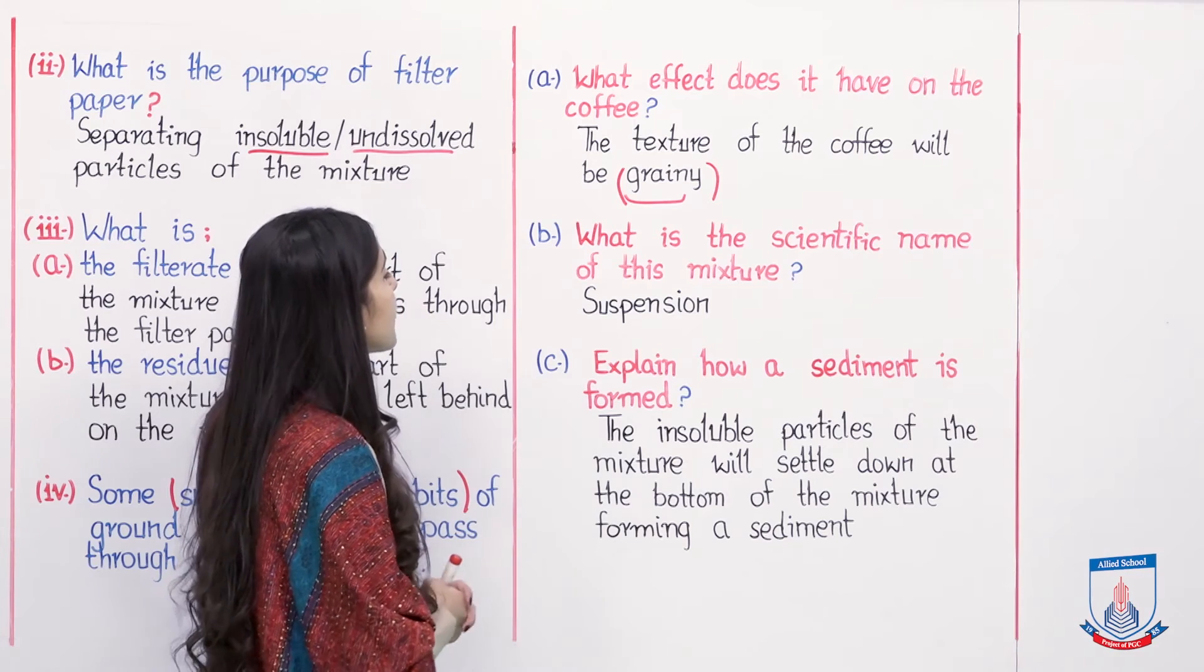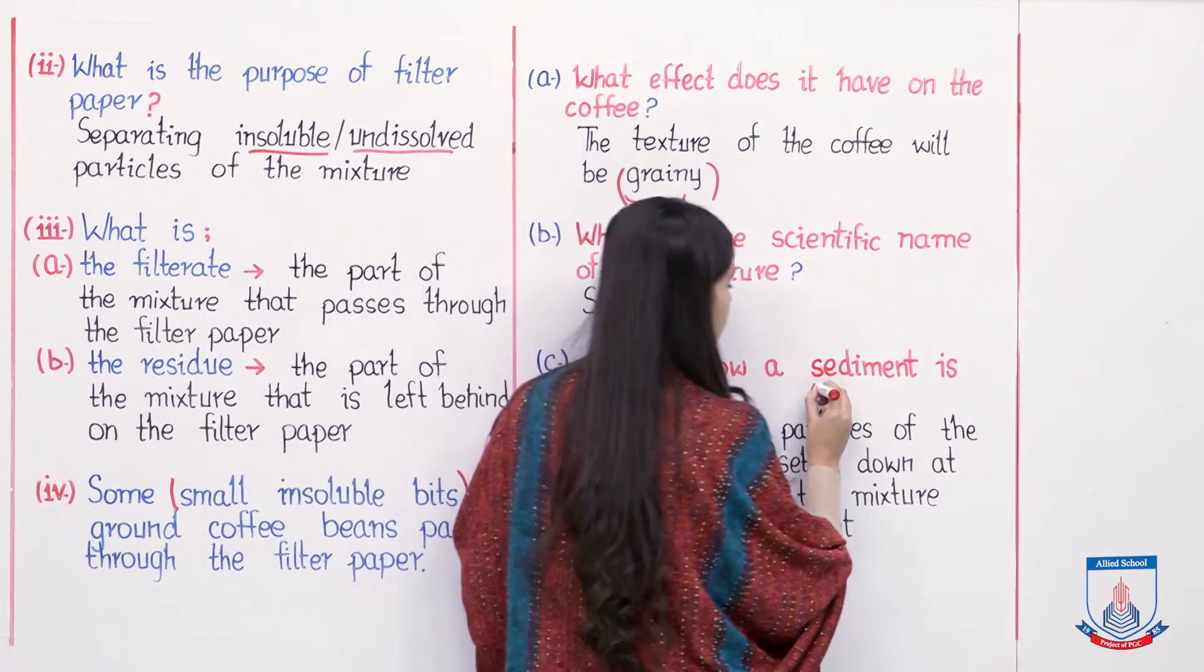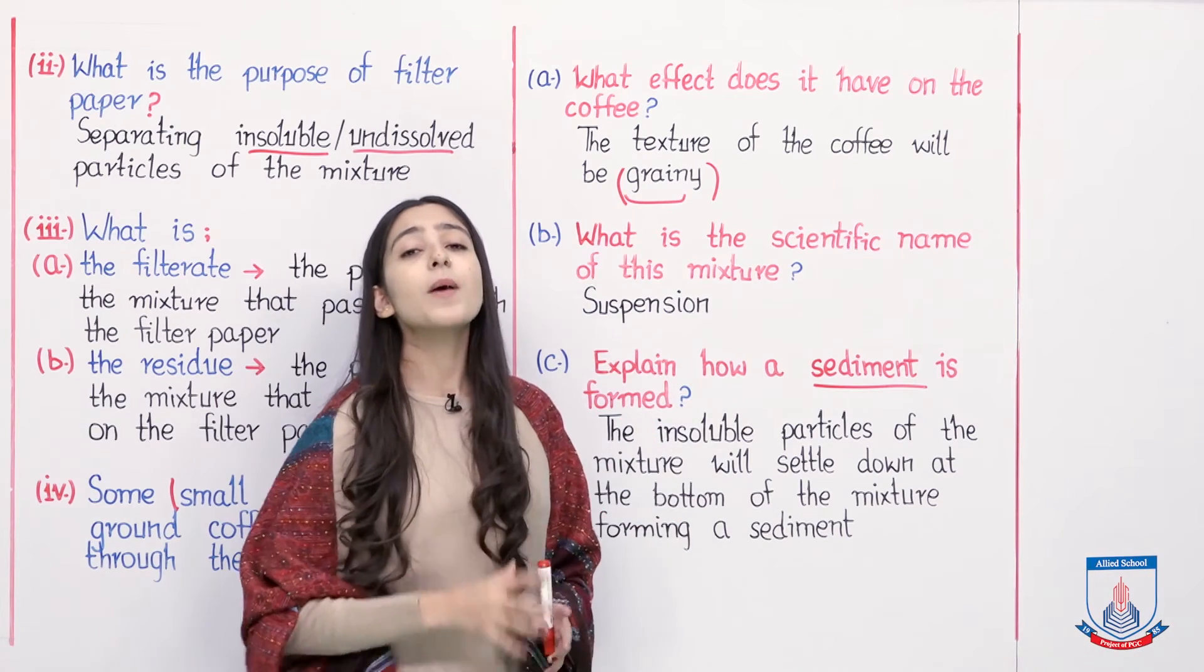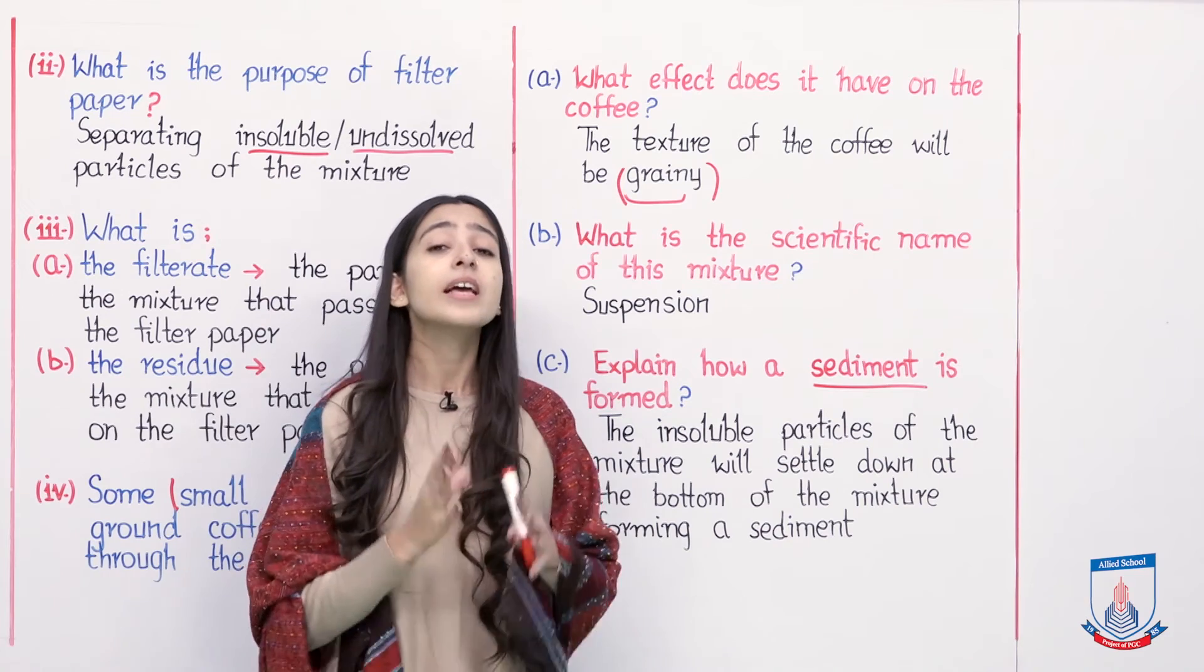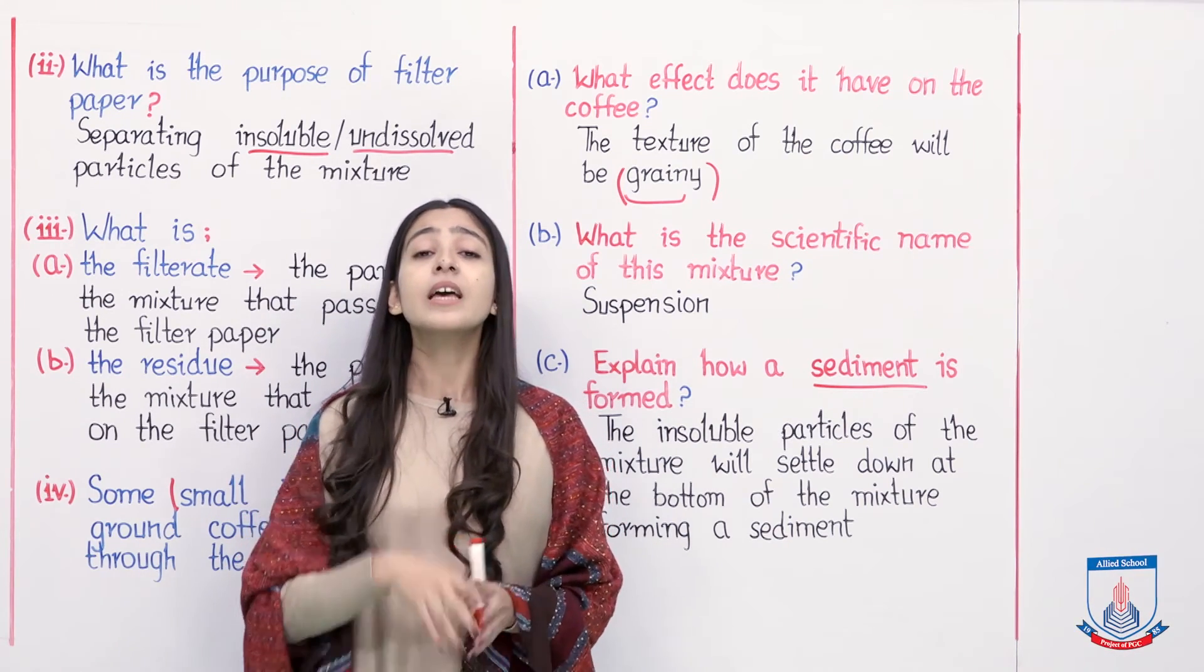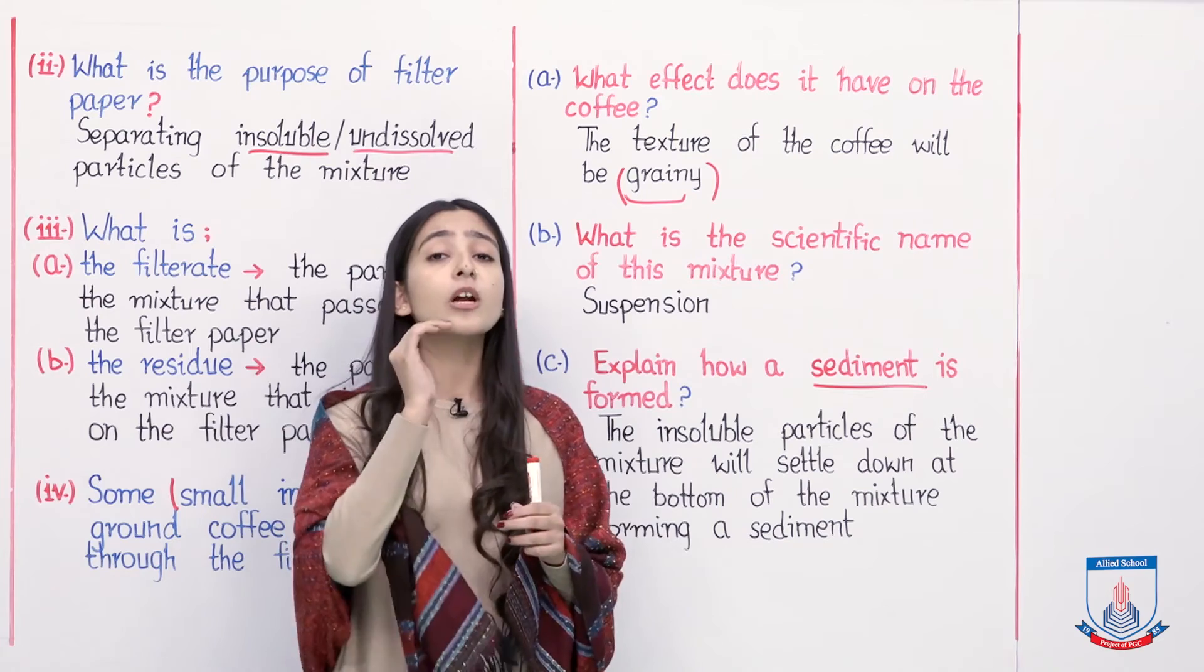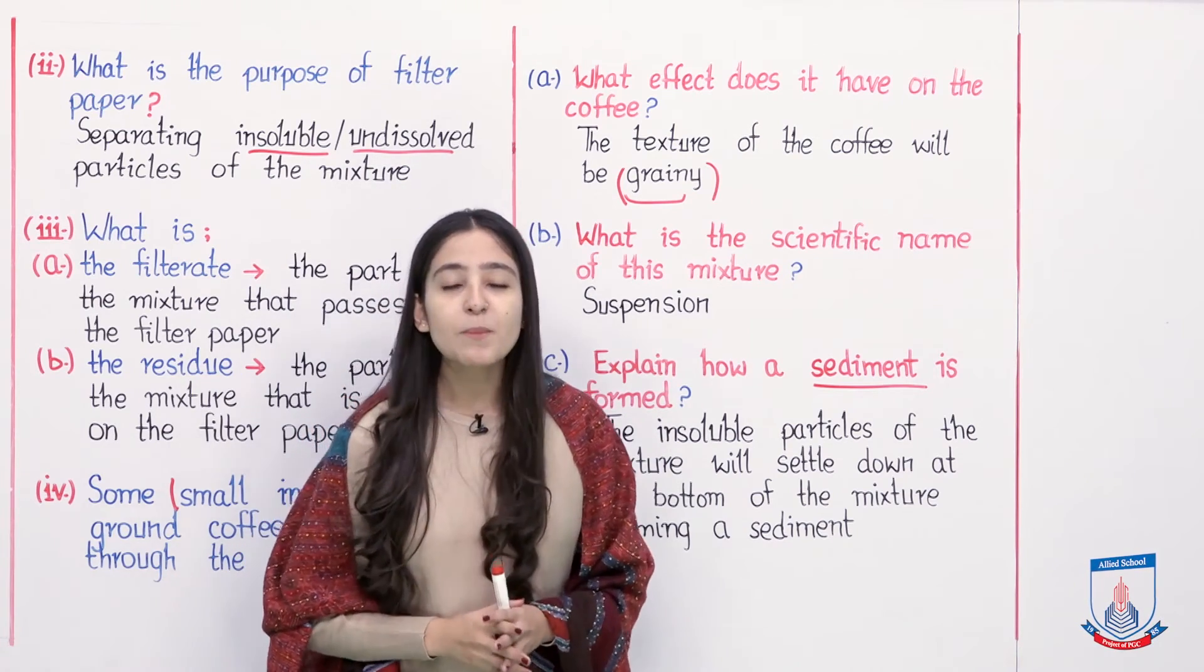Moving towards the last part, part C: explain how a sediment is formed. What kind of sediment is formed? I have told you that this mixture is a suspension in which solid particles are not dissolved in liquid. I told you in the last lecture that if we keep the mixture aside, then the solid particles settle down.